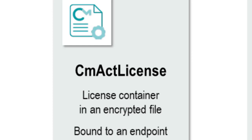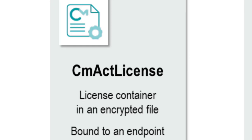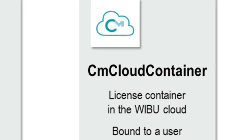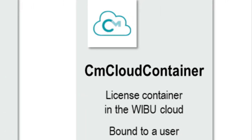For virtual machines and cloud services like Azure, SmartBind creates the fingerprint as a special mixture of hardware and environmental properties. For instance, this ensures that moving the virtual machine is allowed and cloning is forbidden. The third option at your disposal in terms of license containers is storing the license in the cloud permanently and assigning it to a user account. This is your preferred choice for extreme mobility, as you can use the license with any device or via cloud-based services.